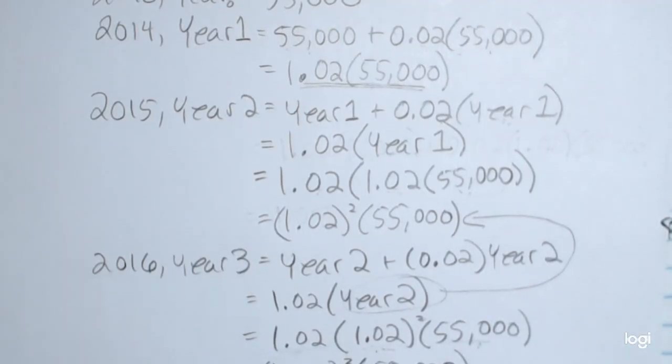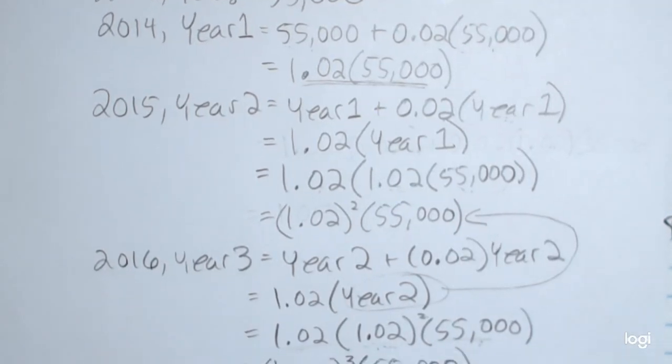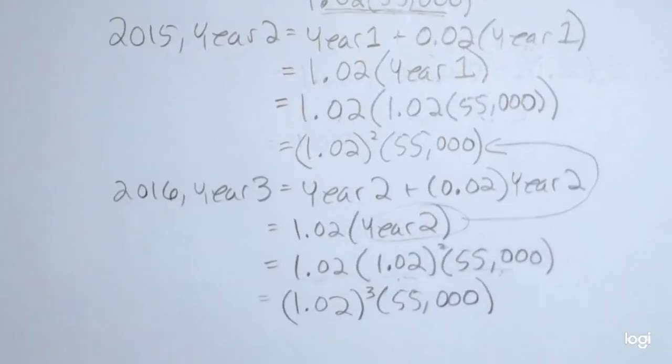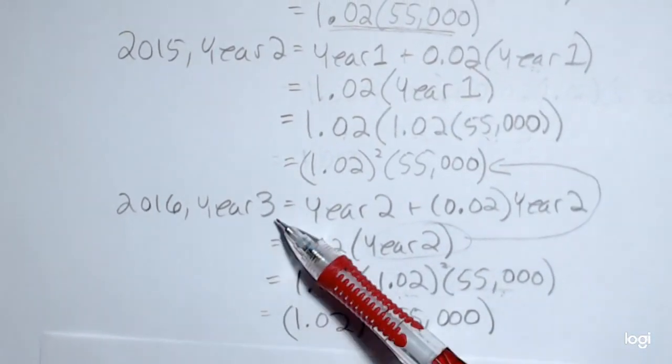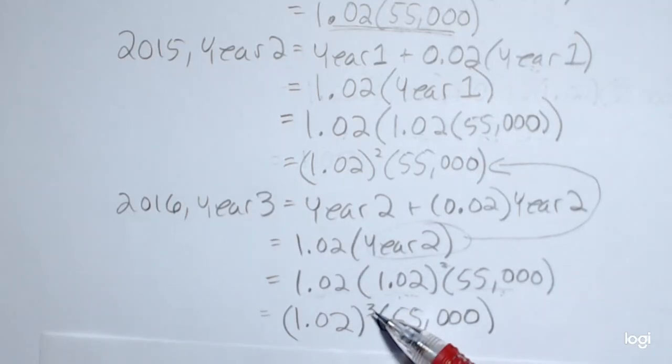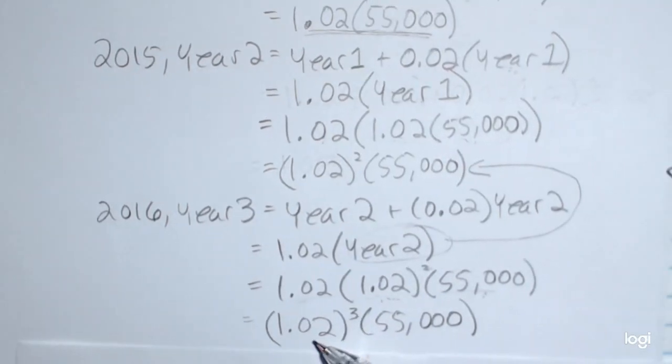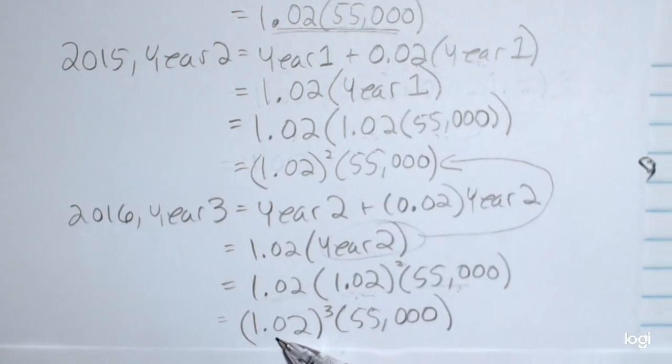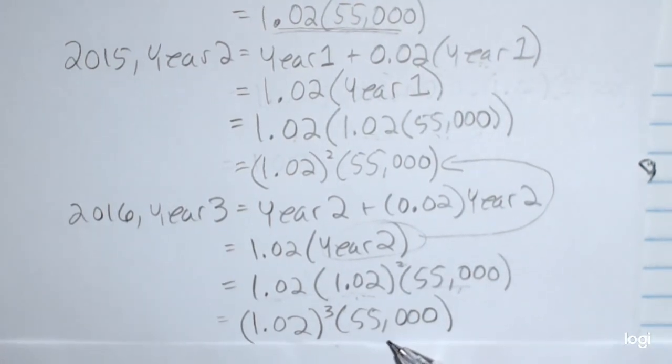Now at this point, you might be seeing the pattern here. The year that I'm at matches the exponent. The base is always going to be 1.02, and I'm multiplying that by the starting amount.